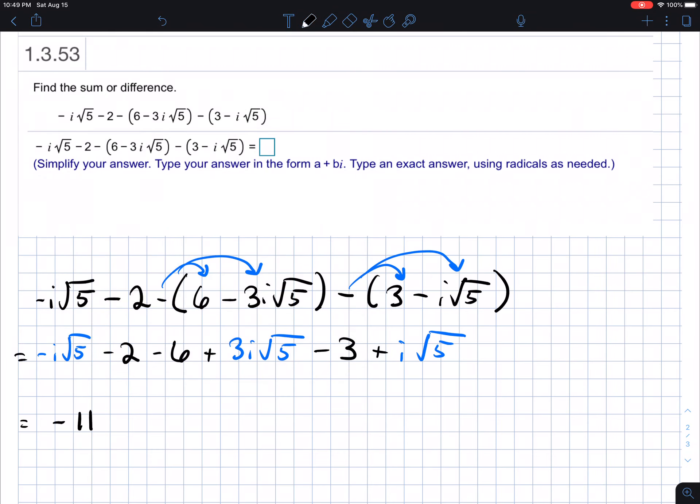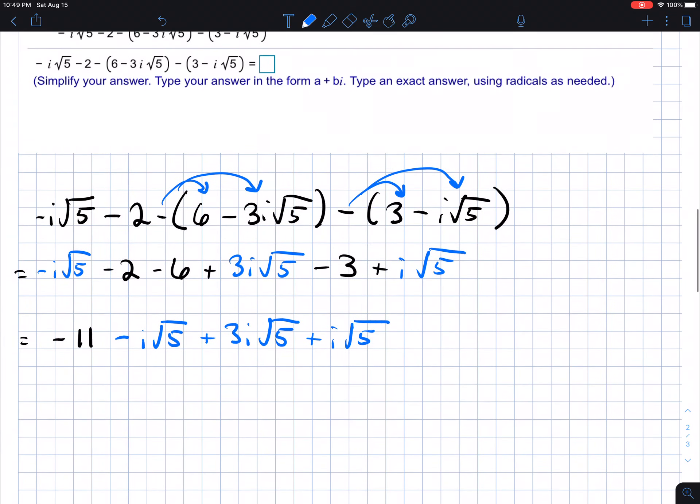Okay. I'm just going to put those side by side. So I have my minus I root five plus three I root five and then plus I root five, right? So notice all of these are times the square root of five. So what I'm going to do is factor out the like term, right?